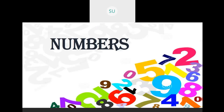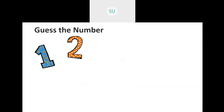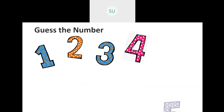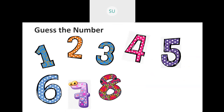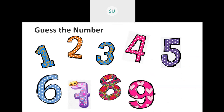So till now, how many numbers have we studied? We have studied numbers from 1 to 9. So we have 1, 2, 3, 4, 5, 6, 7, 8, 9. We have studied numbers till 9 till now.